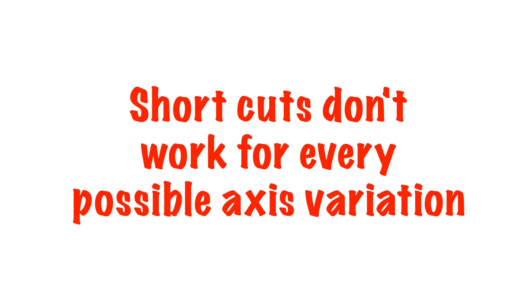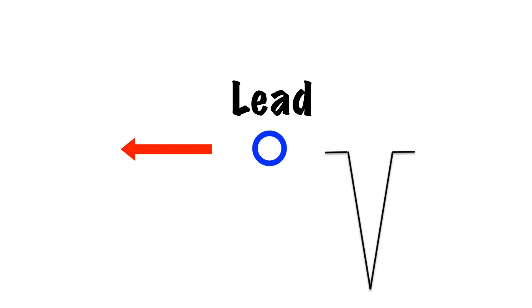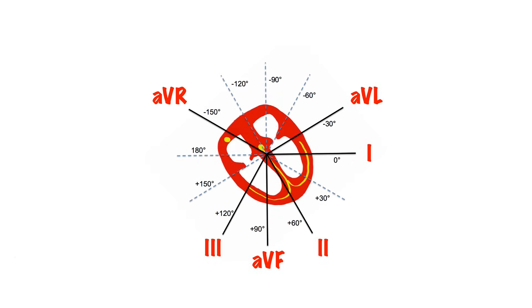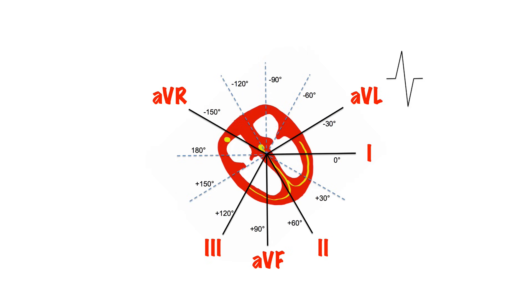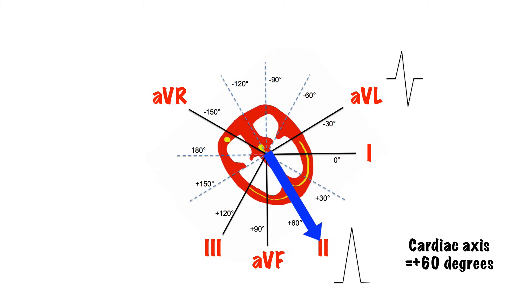How do we calculate the axis? The more an impulse travels towards a lead, the greater the amount of positive deflection compared to negative deflection it causes. The more it travels away from a lead, the greater the amount of negative deflection compared to positive. If the impulse is at 90 degrees to the lead, you get an equal positive and negative deflection. Find a lead where you have an equal amount of positive and negative deflection, or as close to as possible. We know that the impulse must be moving at 90 degrees to this lead, but it could be in either direction. Look at the lead that runs along this vector — if the impulse is travelling away from it there will be a large negative deflection; if travelling towards it, there will be a large positive deflection.